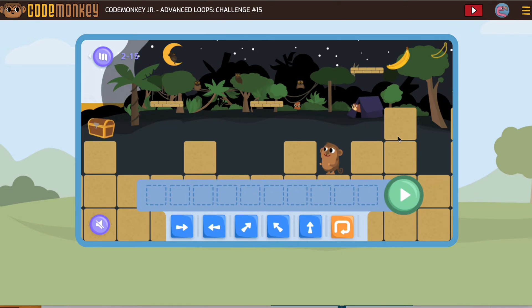Okay, let's take a look at the final challenge in the Code Monkey Jr. Advanced Loops course. So our first job is to get that banana and then see if we can figure out where our loop goes.